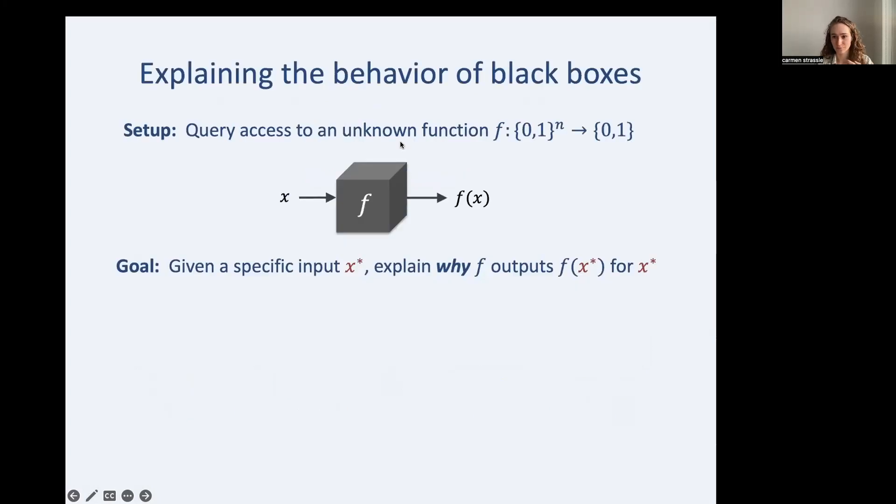All right, what's our motivation here? We want to explain the behavior of black boxes. What does that mean? We have query access to some unknown function f. We put in x. This black box spits out f of x, and we don't know why. So our goal is given a specific input x star, we want to explain why f outputs what it does on x star.